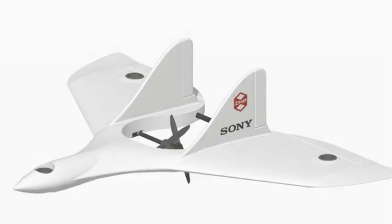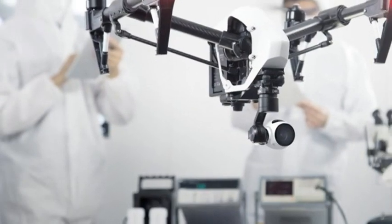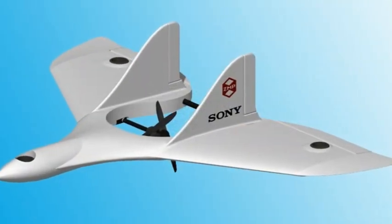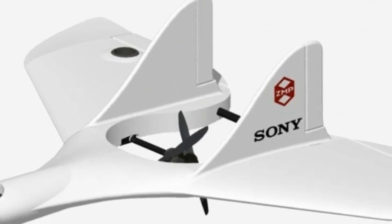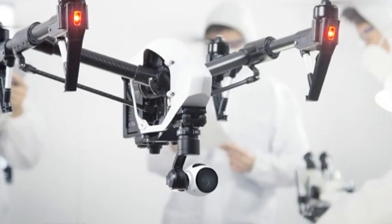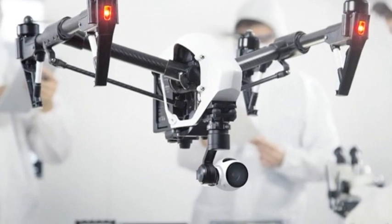Sony is getting into the drone business with a winged machine that takes off vertically and could be used in everything from agriculture to construction. The electronics giant and Mobile ARM said Wednesday it will establish a company next month called Aerosense with Tokyo-based robotic firm ZMP.